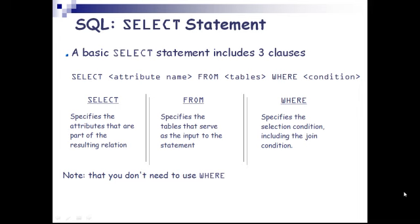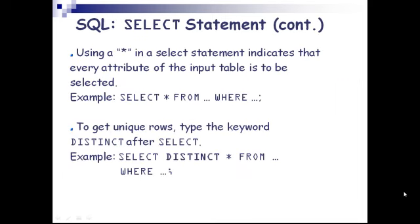The SELECT statement includes three clauses: SELECT attribute_name FROM tables WHERE condition. SELECT specifies the attributes that are part of the resulting relation; FROM specifies the tables that serve as input; WHERE specifies the selection condition including the join condition. Using an asterisk (*) in the SELECT statement indicates every attribute is to be selected. To get unique rows, type the keyword DISTINCT after SELECT — e.g., SELECT DISTINCT * FROM table_name WHERE condition.